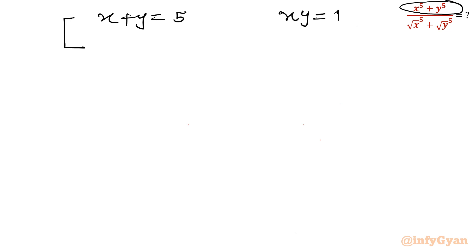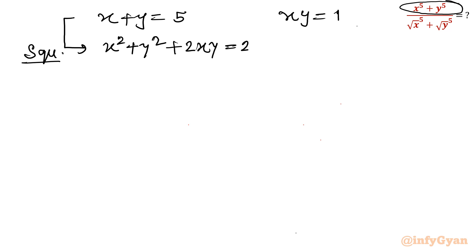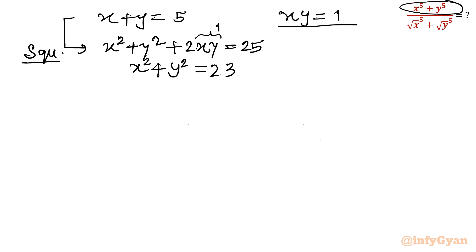Squaring x + y = 5 gives x² + y² + 2xy = 25. Since xy = 1, we have 2xy = 2, so x² + y² = 25 − 2 = 23. The sum of squares is 23.